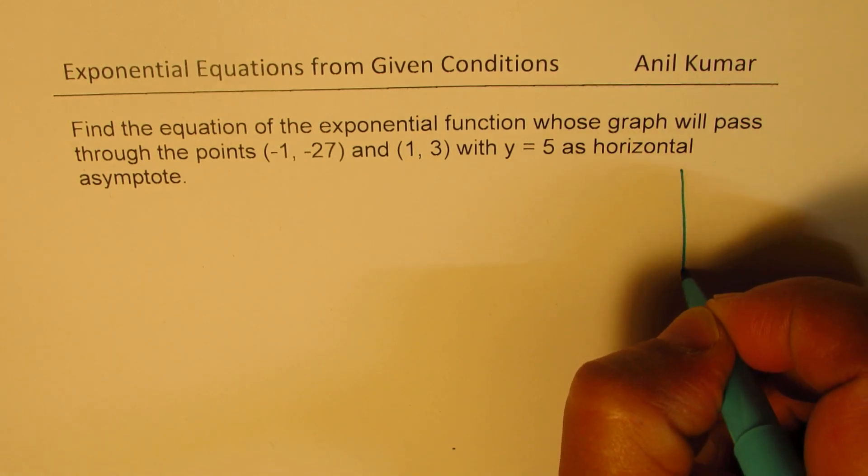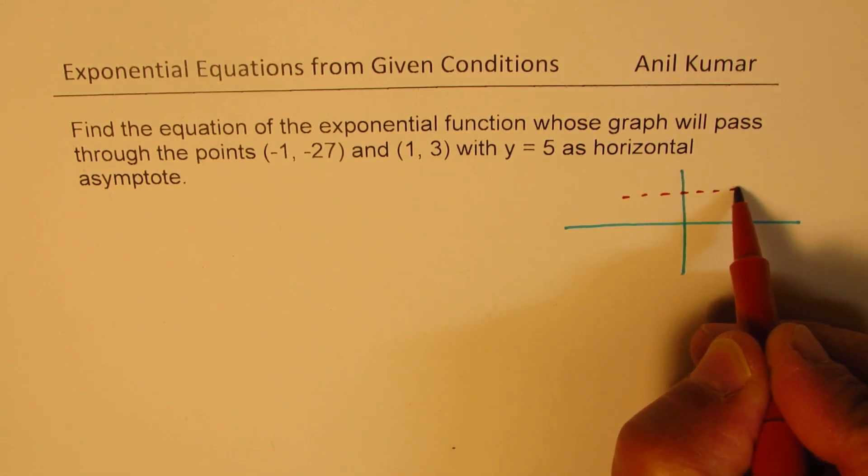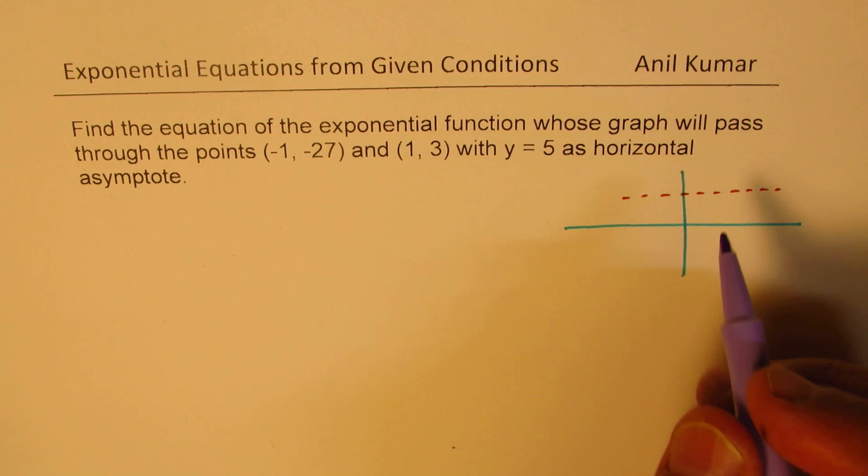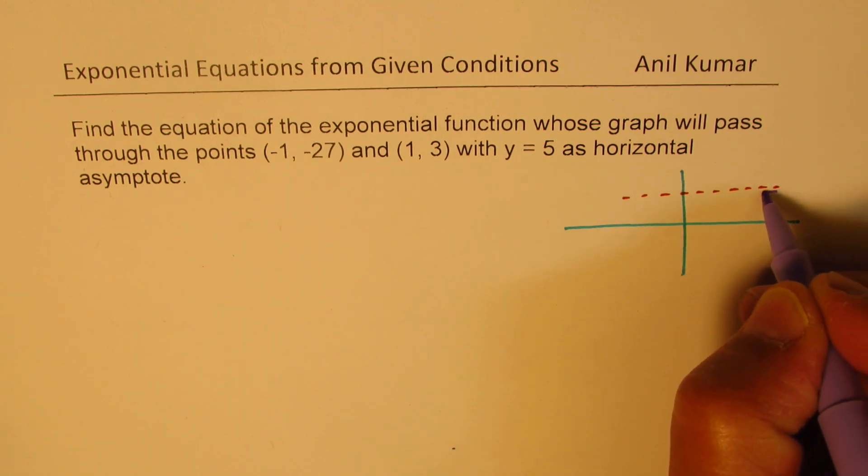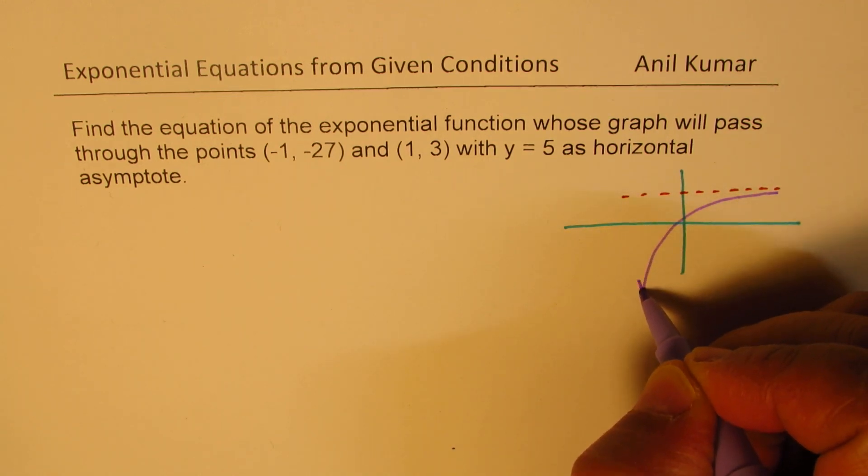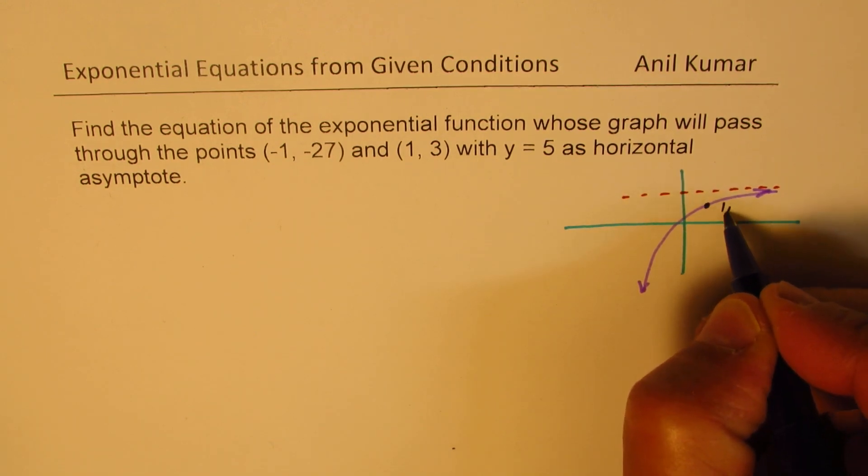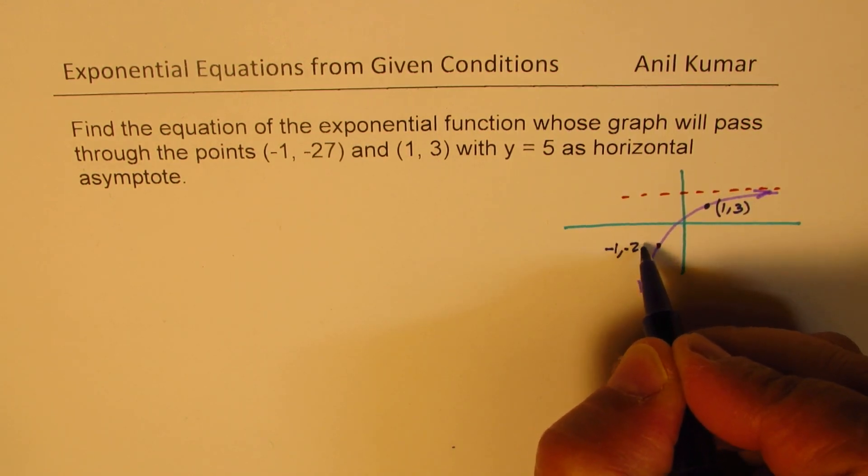Well, if you try to sketch this, it will look something like this. It has horizontal asymptote y equals 5, so let's say something like this. The points are (1, 3) somewhere here, and then (-1, -27) maybe kind of like this. That could be the function. We are not very sure about the x and y intercepts, but we know two points on this graph, and these points are (1, 3) and (-1, -27).